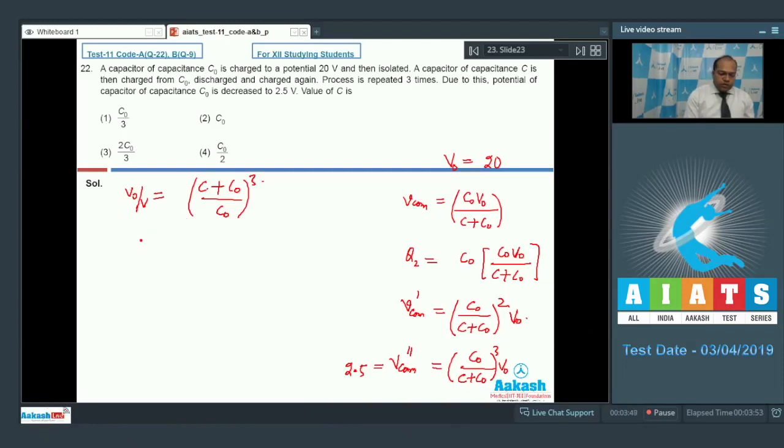So if I take the cube root of this, then 2 is equal to C plus C0 by C0 or it can be written as 1 plus C by C0. So if I solve this equation, then the value of C comes out to be C0. So option 2 is the correct answer.